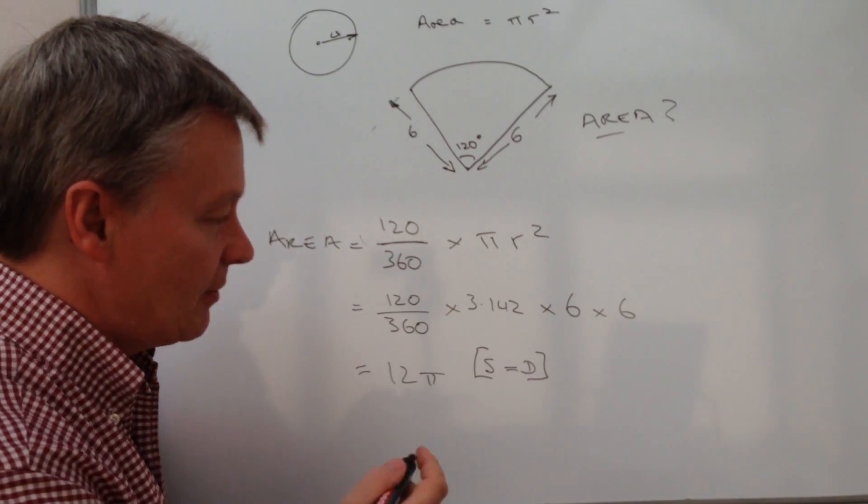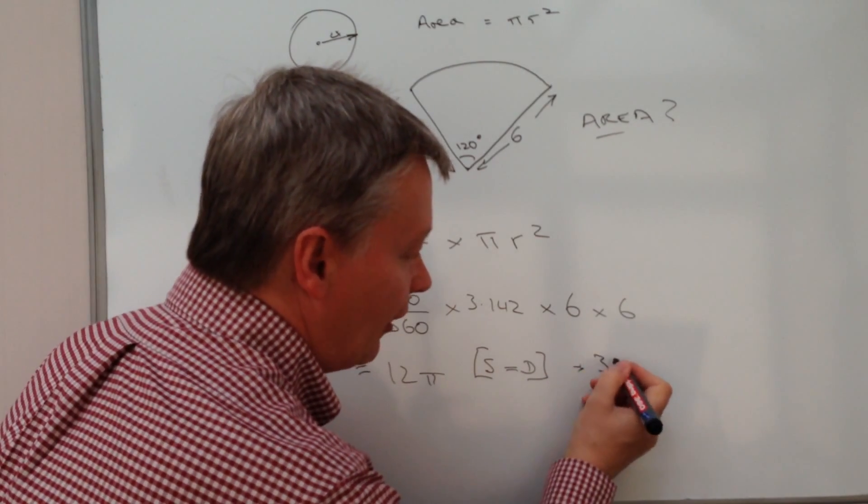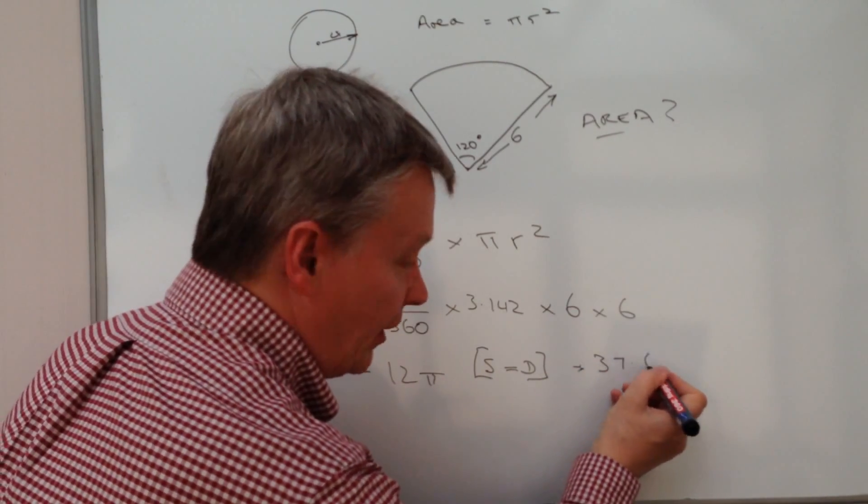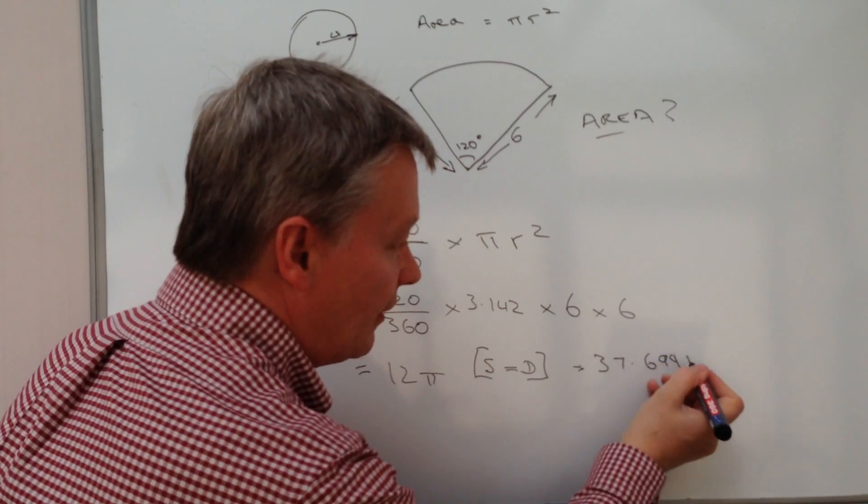And if you press that button, that will give you the decimal equivalent of that, which is actually a very long number, which is 37.6911. Nope, 69911.